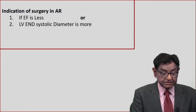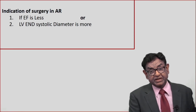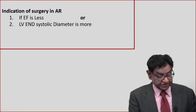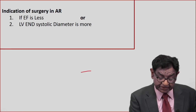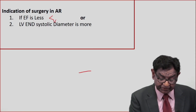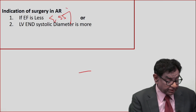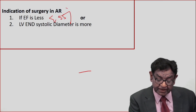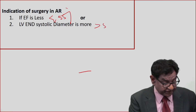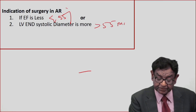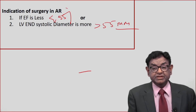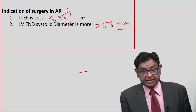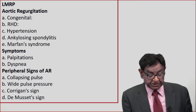Indications for AR surgery: ejection fraction less than 55%, or end-diastolic diameter more than 55 millimeters — these are the two important indications for surgery.